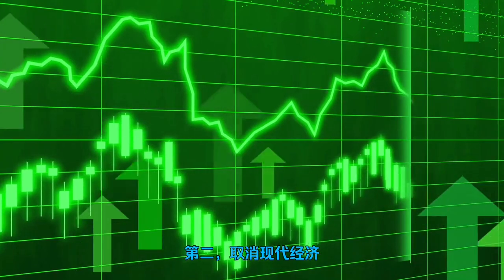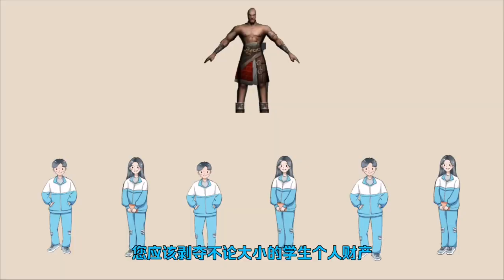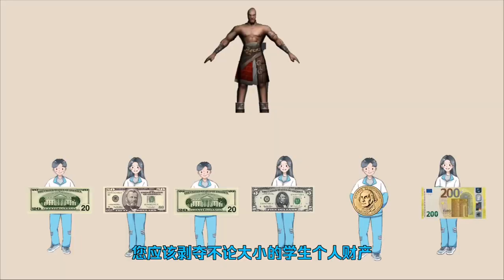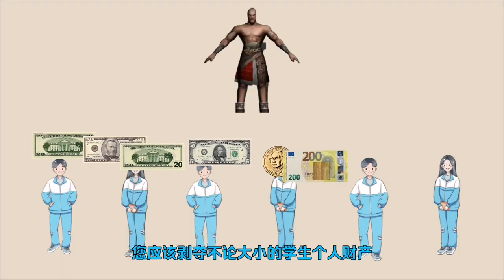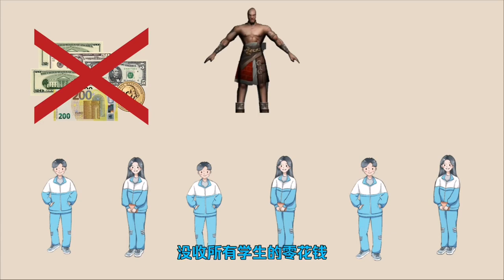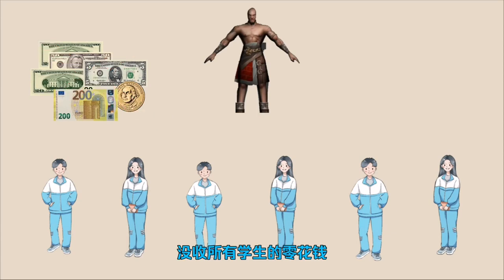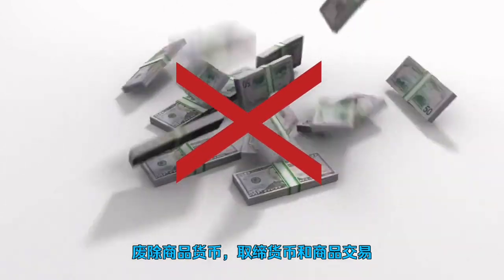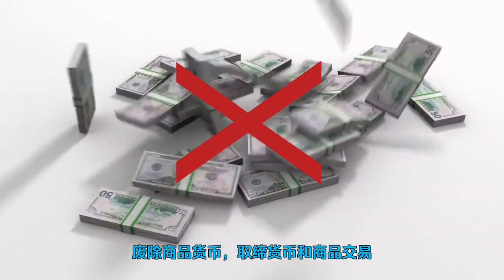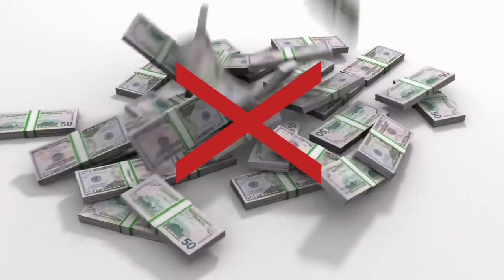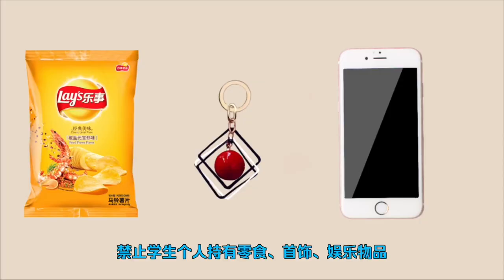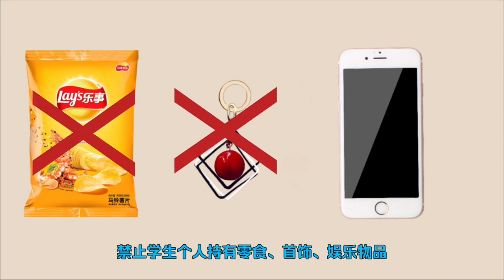Secondly, abolish the modern economy. You should deprive students of personal property. Regardless of size, confiscate all students' pocket money, abolish commodity currencies, and ban currency and commodity transactions. Individual students are prohibited from holding snacks, jewelry, and entertainment items.